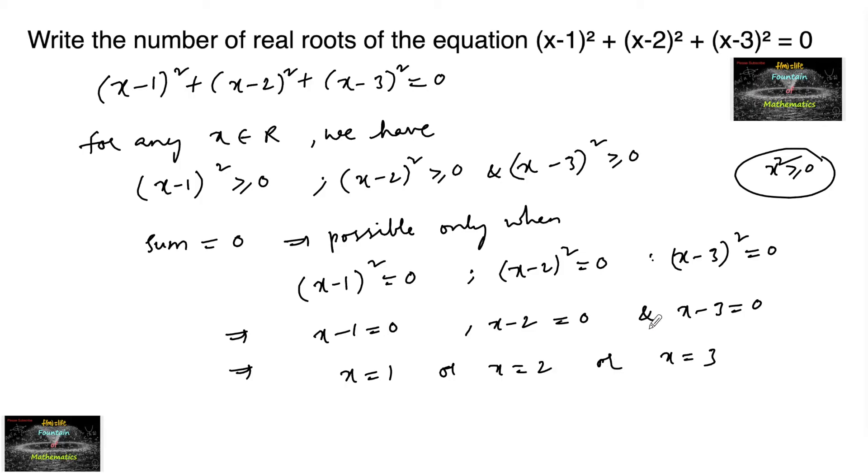But none of these values will satisfy the given equation. Suppose if I substitute x is equal to 1, the first term will become 0 and the remaining terms will be some positive numbers. Sum of positive numbers cannot be equal to 0.